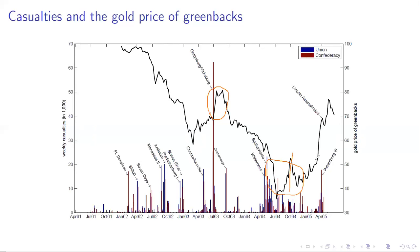With Lincoln's reelection, the value of the greenback goes up — it then falls back, but rises again with his victory. As the war ends and it becomes clear the North will win, the greenback rises. Lincoln is then assassinated, there's a brief fall, and then it goes back up. This is a nice example of using asset prices to infer people's real-time expectations.